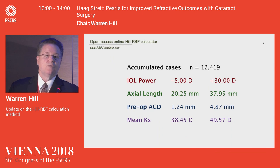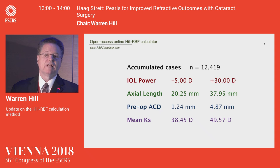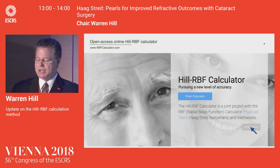Where we are right now: the artificial intelligence model is now based on 12,400 cases. We go down to minus 5 and up to plus 30, with a very broad range of axial length, central corneal power, and anterior chamber depth.